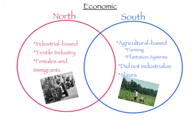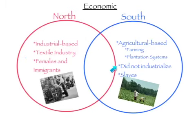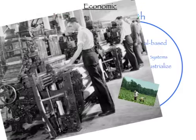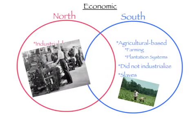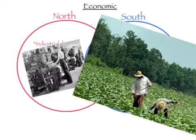Economic Differences Between the North and the South. The North is industrial-based while the South is agricultural-based, with farming and plantation systems. The North has a textile industry and did industrialize, while the South did not. Workers in the North were females and immigrants, while workers in the South were slaves.